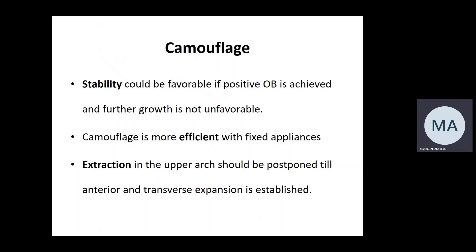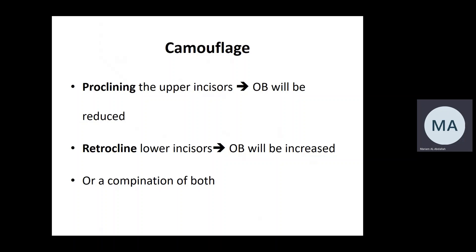Camouflage is accepting the underlying skeletal discrepancy in the anterior-posterior and vertical dimensions and correcting the remaining features of the malocclusion. Stability of such treatment relies on the amount of overbite and any remaining growth, which is usually unfavorable in Class III. Camouflage is more efficient with fixed appliances than removable. Any extraction should be avoided until expansion and proclination of the upper incisors are completed and the need for extraction reassessed; we do not extract first in the upper arch.